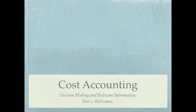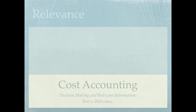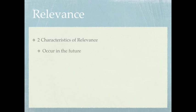This is part one in our Decision-Making and Relevant Information series where we're going to be discussing relevance. The first thing we need to talk about is characteristics of relevance, and there are two. For something to be relevant when we're talking about a decision we're trying to make, one characteristic is it must occur in the future, and the second is it must differ among alternatives.